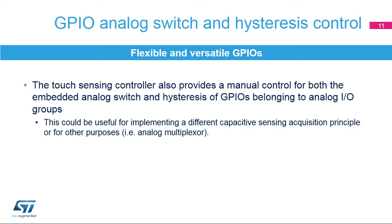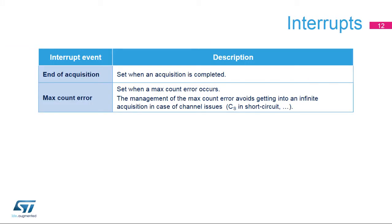In addition to managing the charge transfer capacitive acquisition principle, the TSC peripheral allows the designer to individually control the analog switch and Schmitt trigger hysteresis of I/Os belonging to analog I/O groups. This capability could be useful to implement a different capacitive sense acquisition principle or for other purposes, such as an analog multiplexer. The TSC peripheral offers two interrupt sources: end-of-acquisition, which notifies the CPU when all active channels are acquired, and max-count error, which is set when acquisition fails on one or several channels, preventing an infinite acquisition in the event of a hardware failure.